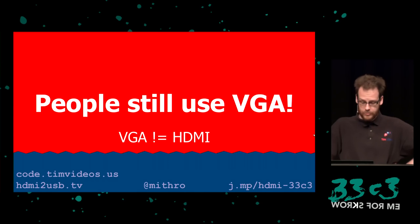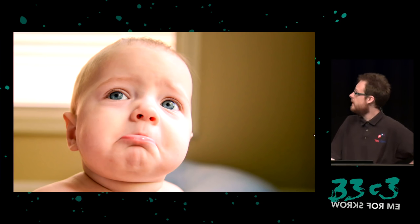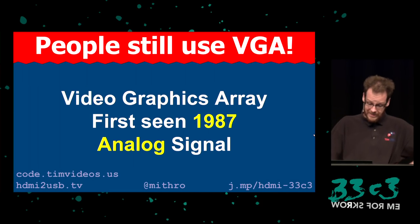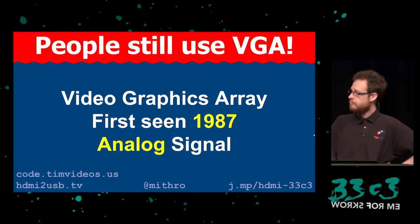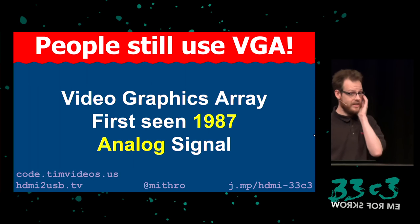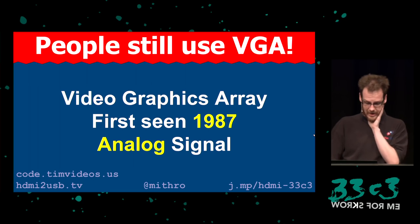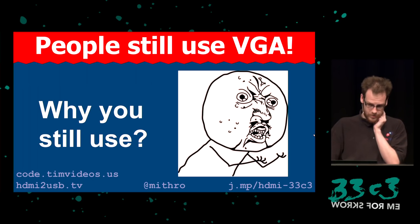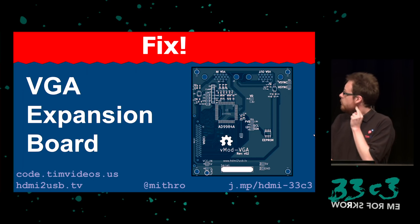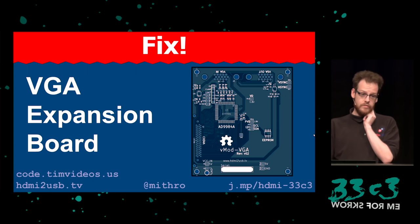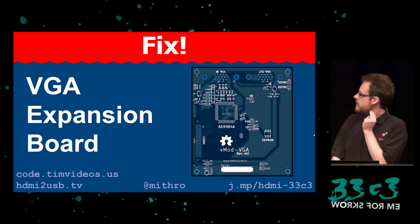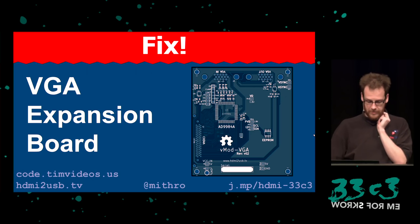The first problem is that people still use VGA. This makes me sad, because VGA is not HDMI — it was invented in 1987 and it's an analog signal. While HDMI shares some history with VGA, you can't use the same techniques for capturing HDMI that you can for VGA. We developed a VGA expansion board to allow us to capture VGA using the same device, but nobody has actually finished the firmware to make them work yet, so I'd love help there.